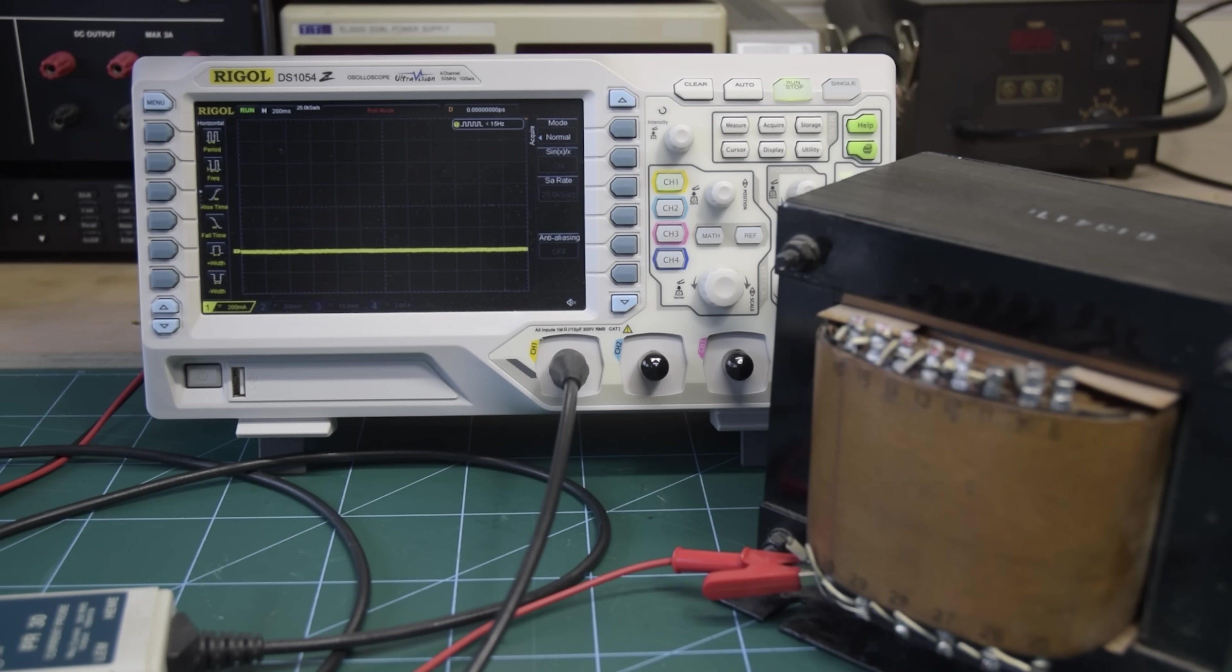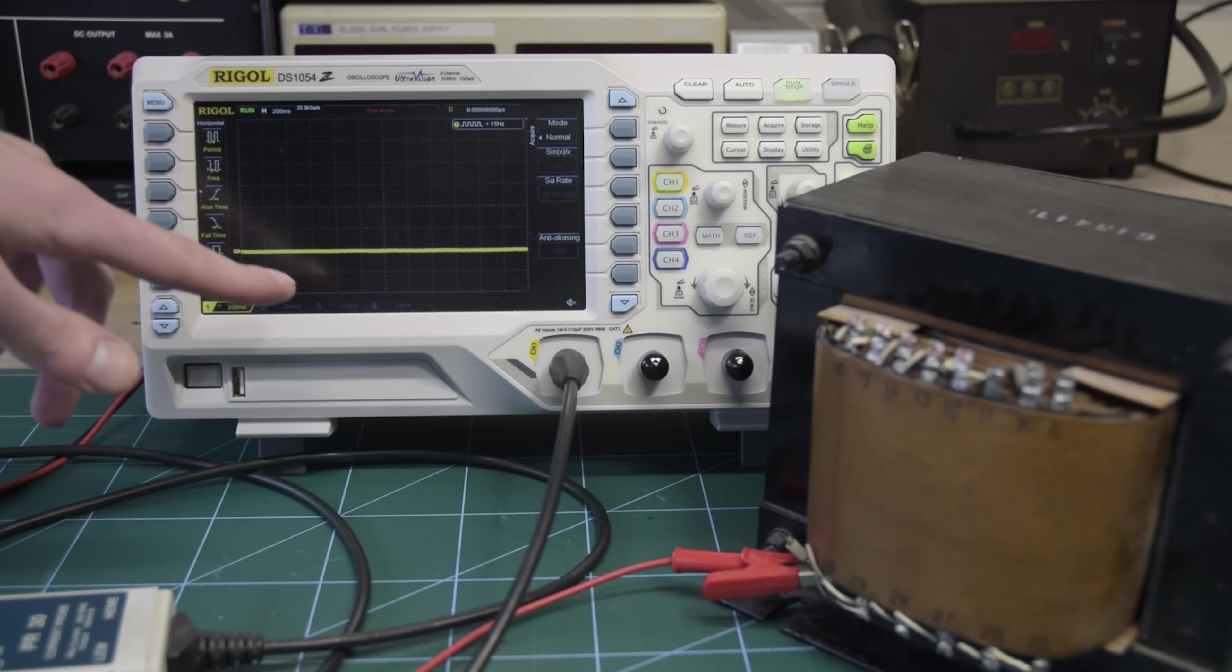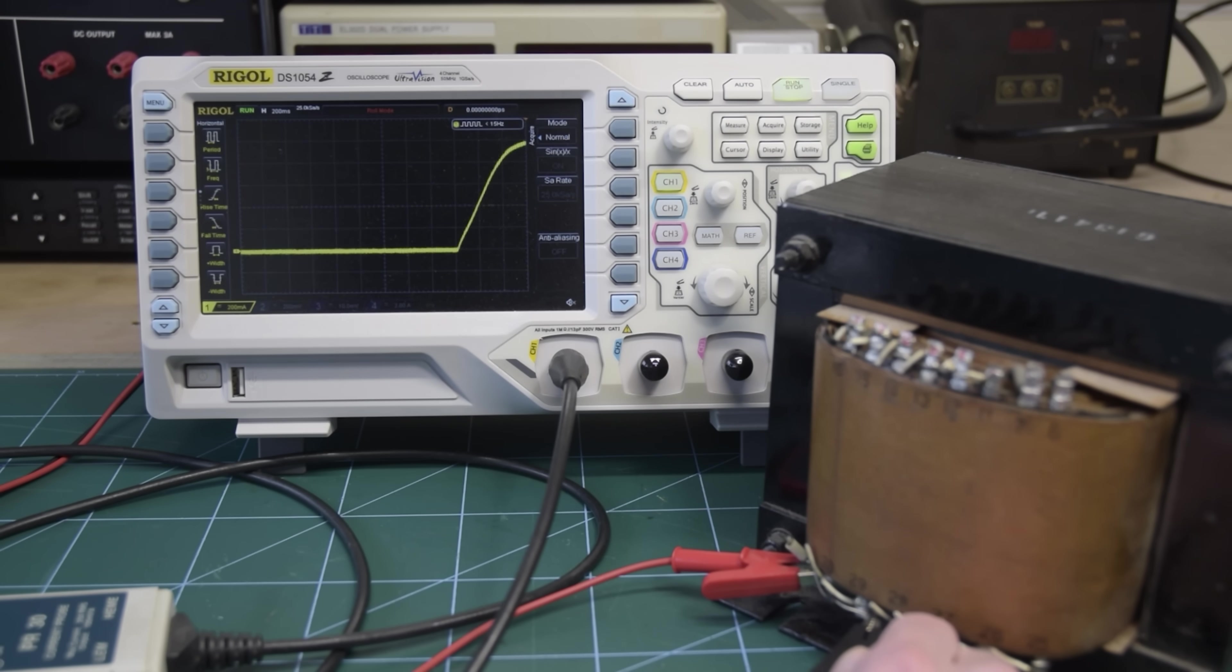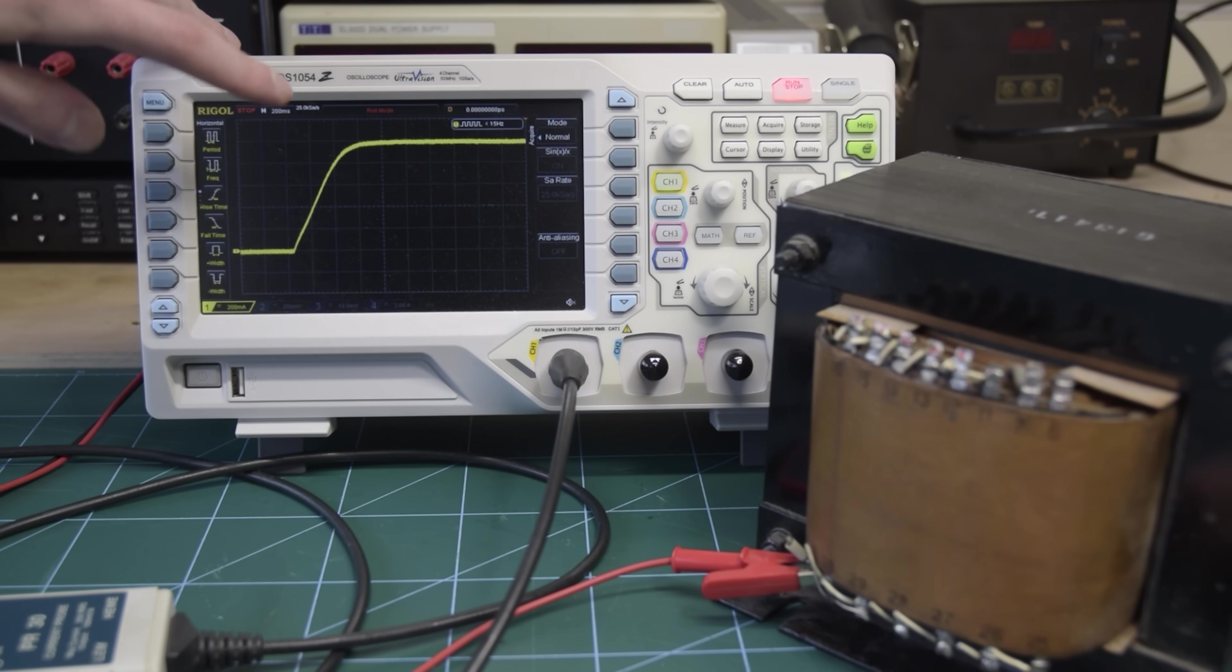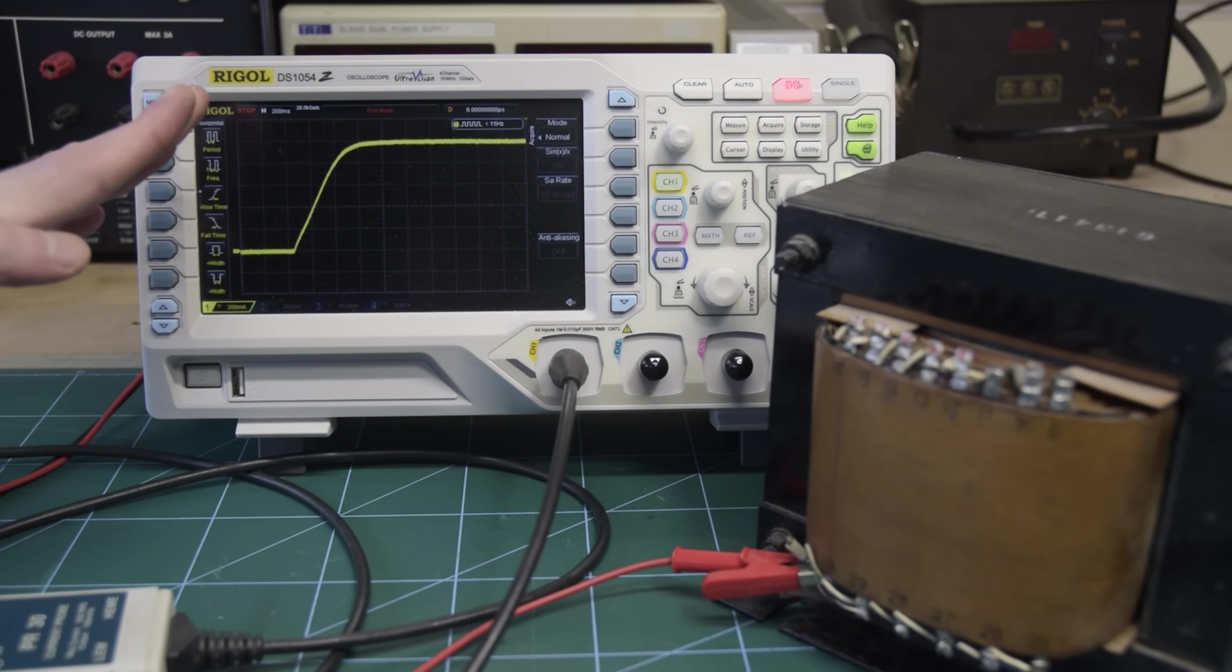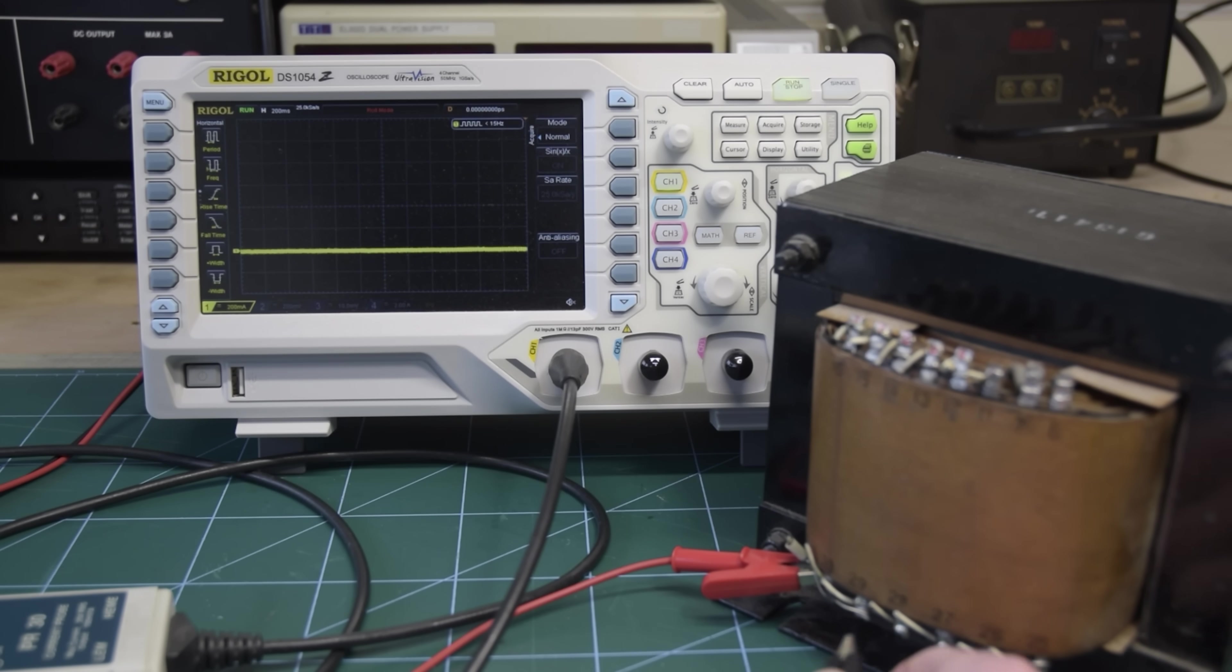Now here we have the oscilloscope showing current through our inductor, which at the moment is at zero. And what I'm going to do now is connect a voltage source across the inductor. And there you can see a nice gentle ramp, as the current slowly increases, the rate of which is limited by our inductance.